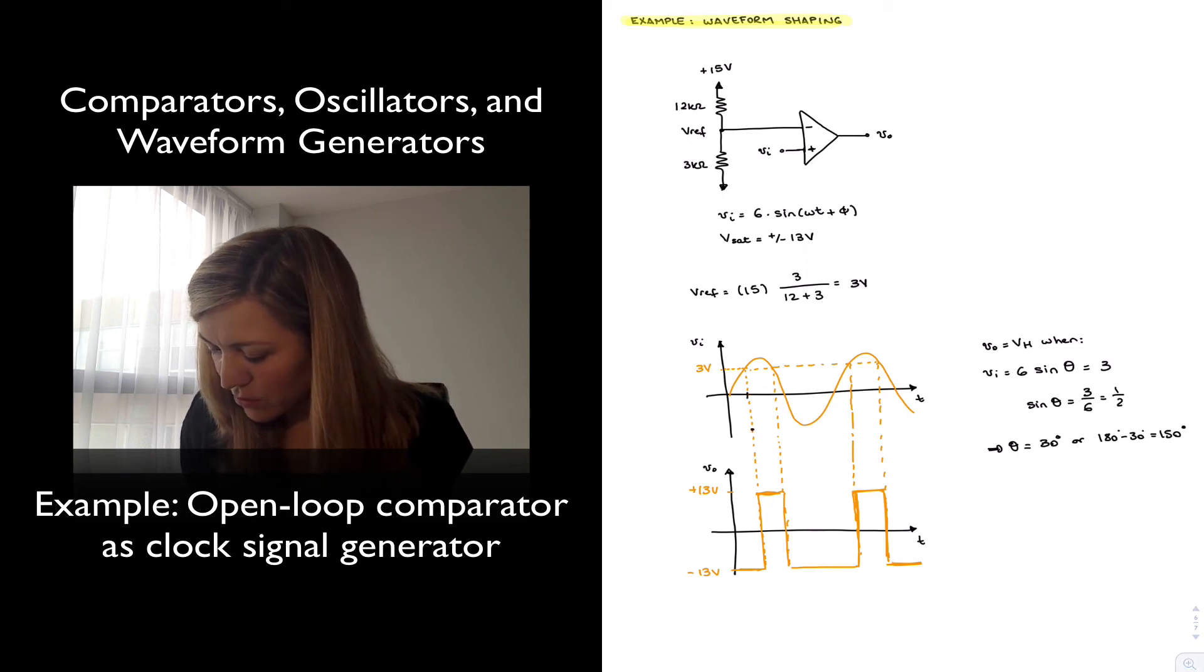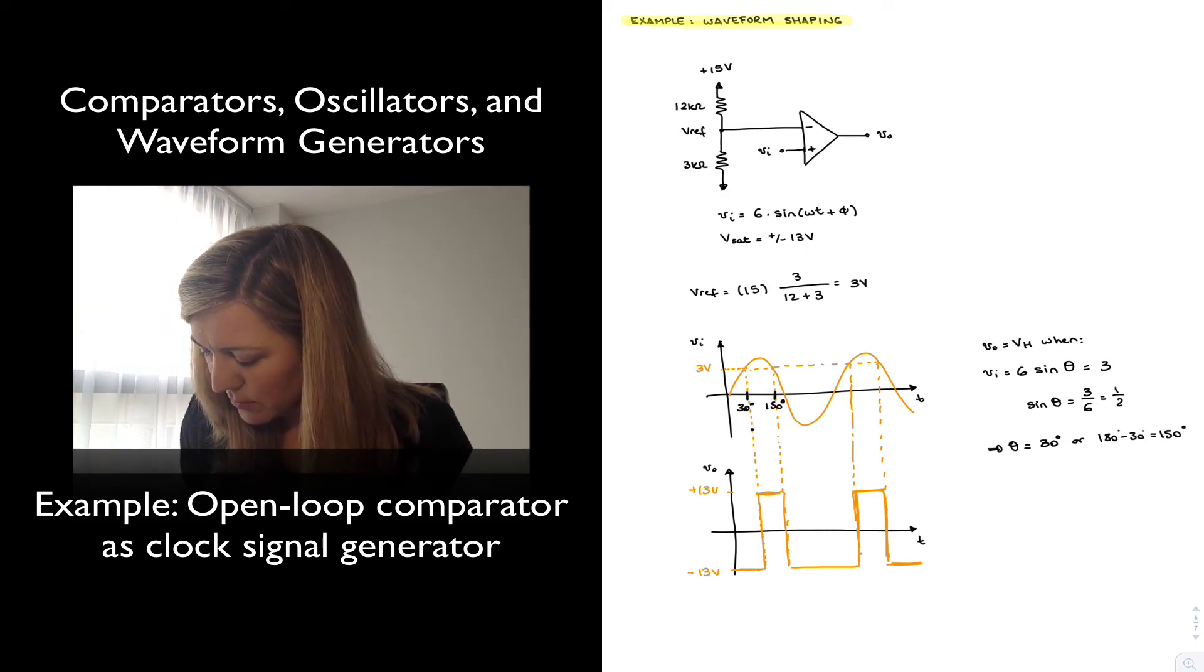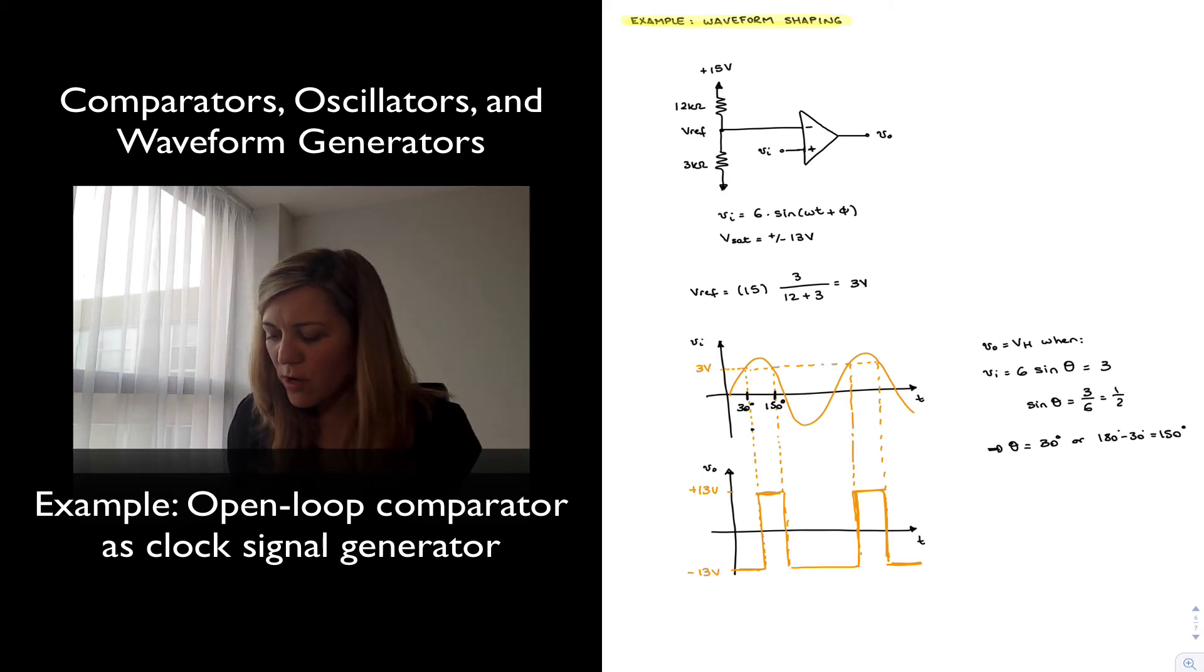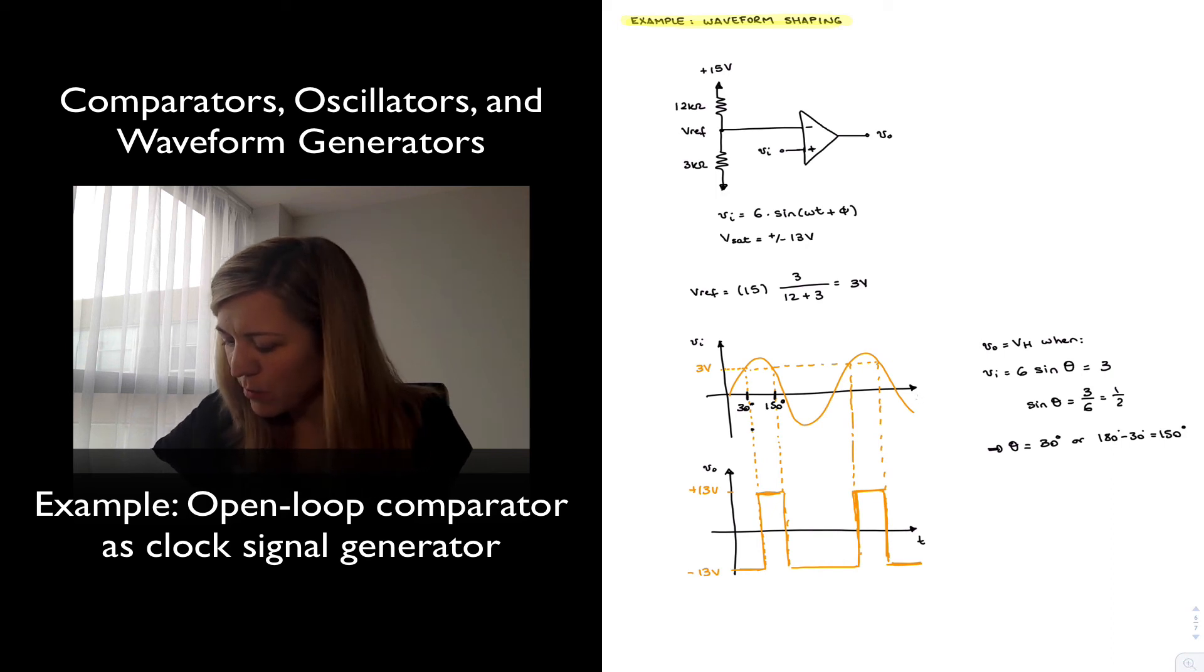Obviously this point over here corresponds to, if we look at it in the graph, this is going to be the point corresponding to 30 degrees, this is going to be the point corresponding to 150 degrees. The duty cycle is the percentage of time that my clock signal is high, and that's going to be for the difference between the two, which is 120 degrees.